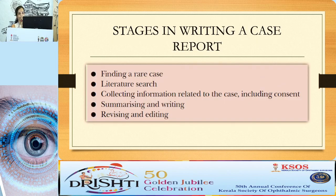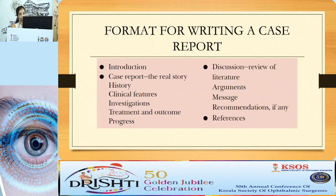Let's go to the stages in writing a case report. First, find a case or disease which is worth reporting. Then do a proper literature search, collect information related to the case, get consent from the patient, summarize and write it, then revise and edit. The format includes: introduction, case report presentation, discussion with a review of literature, arguments for the case, comparison with what is known, the message, recommendations, and references.